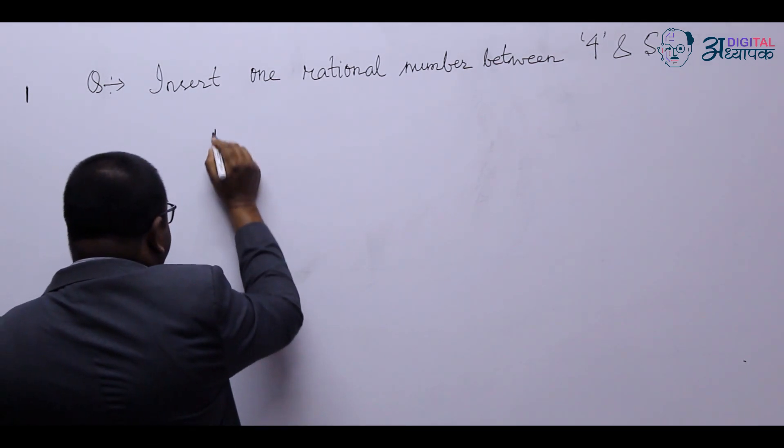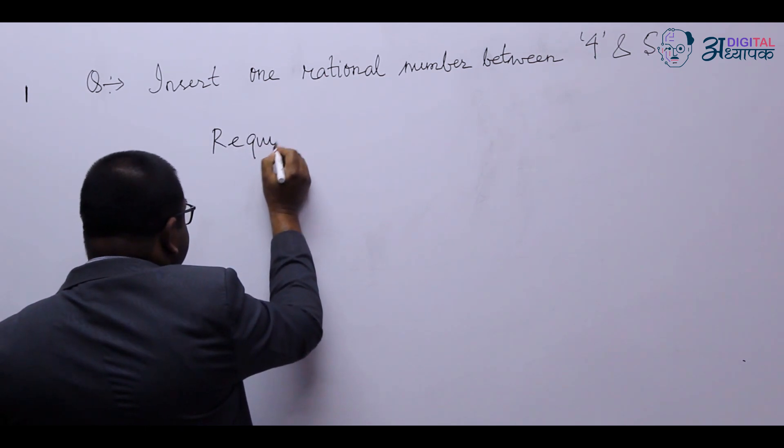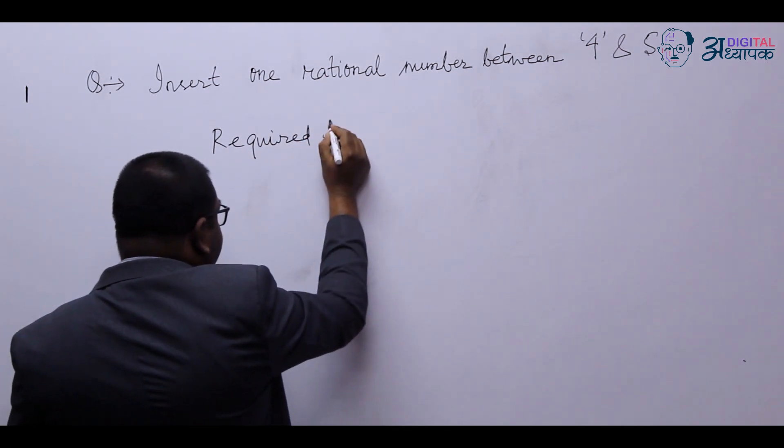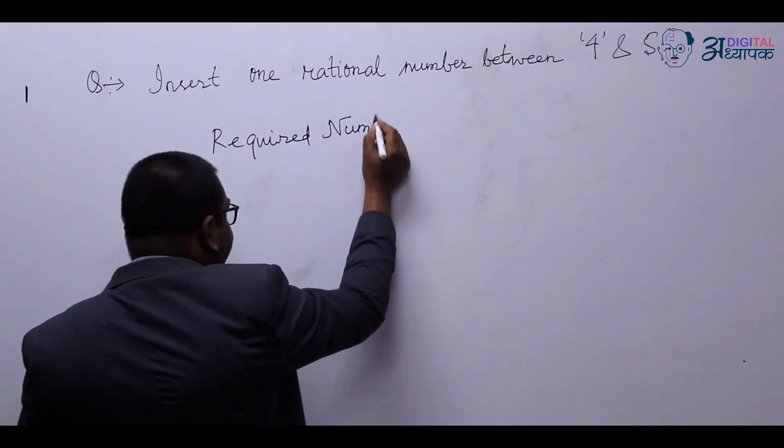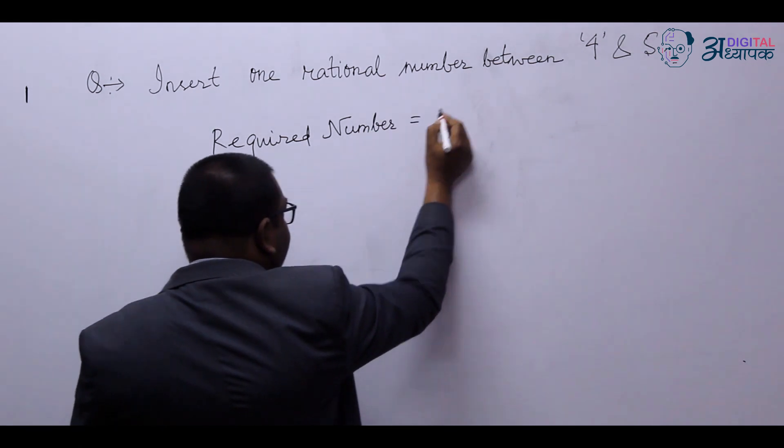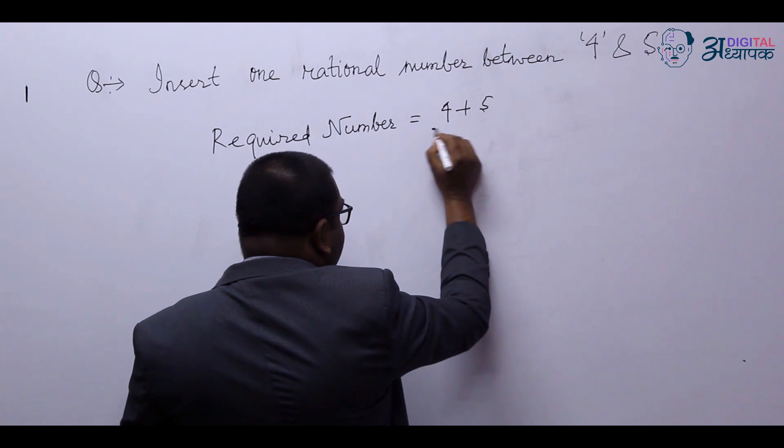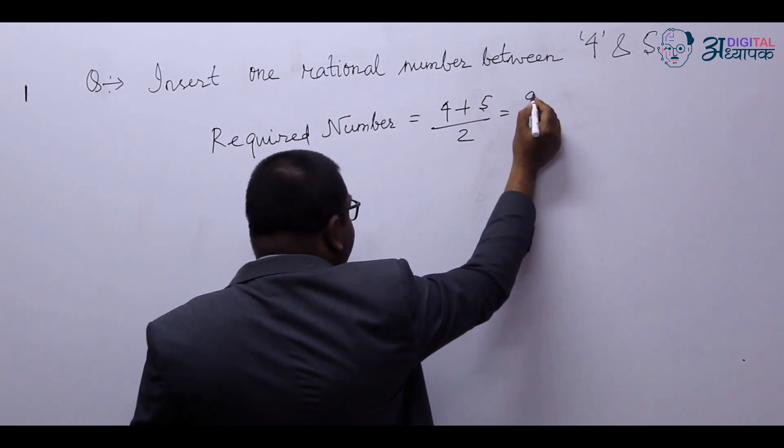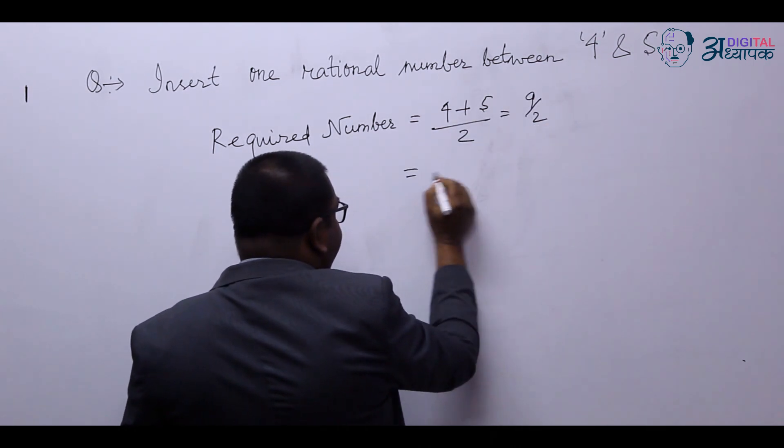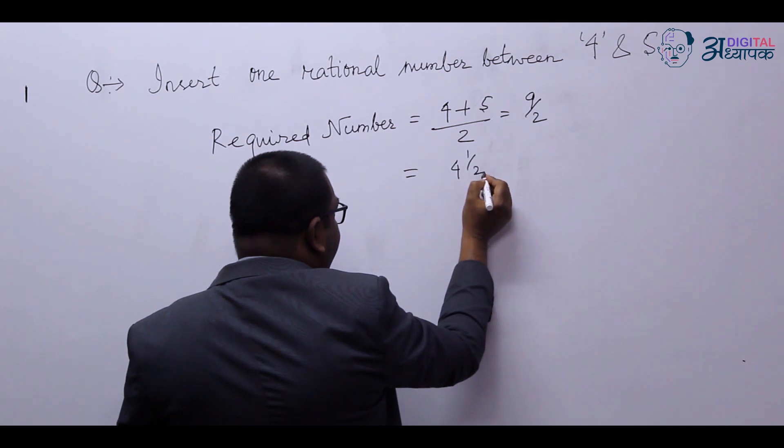So you can write required number, that means the number that you require for the answer, is equal to 4 plus 5 upon 2, that is 9 upon 2, and that is 4 whole number 1 upon 2.